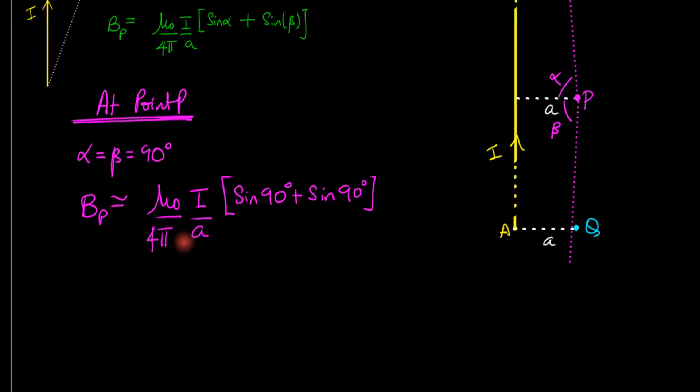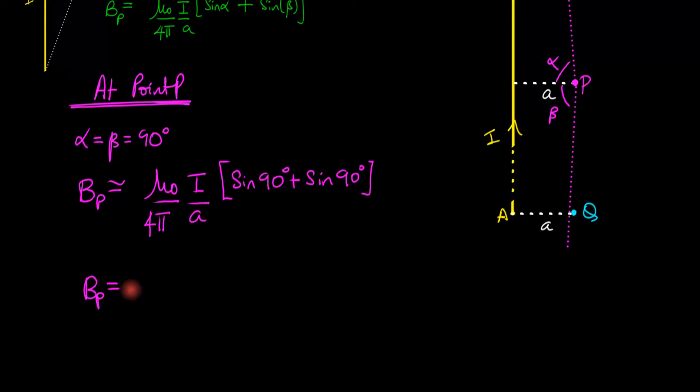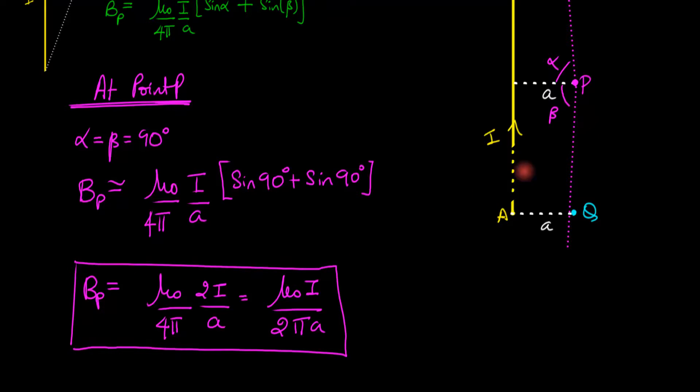That's going to be μ₀ divided by 4π times 2. Sine 90 is 1, so 1 plus 1 is 2. 2i divided by a gives us μ₀i divided by 2πa. That's the answer, the expression for the magnetic field at point P.